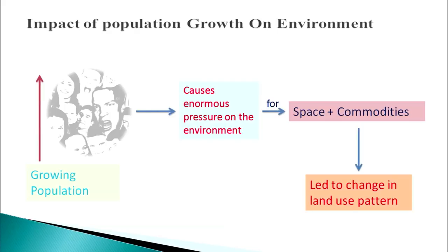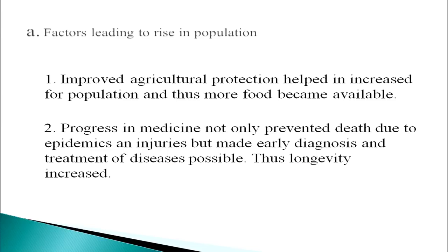There are several causes. Five million people lived in the world at the time when agriculture began about 12,000 years ago. The population in our country alone is now well above 1 billion. This enormous increase in human population is making the future of humans insecure. Factors leading to rise in population are: improved agriculture helped increase food availability; and progress in medicine not only prevented death due to epidemics and injuries but made early diagnosis and treatment of diseases possible, thus increasing longevity.